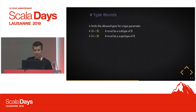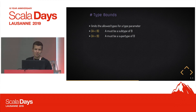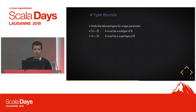Something you also might see in Scala code is type bounds. Even if you won't use them very often in your own code, it's important to be able to read and understand them. If you have a type parameter and you see `A <: B`, it says A must be a subtype of B, and there is the other way around as well.